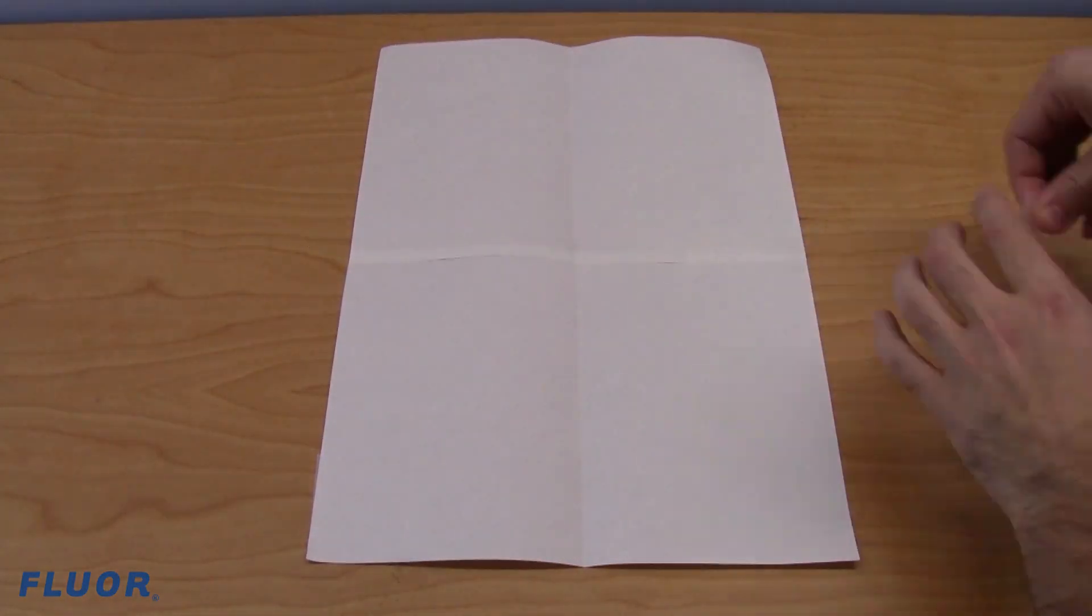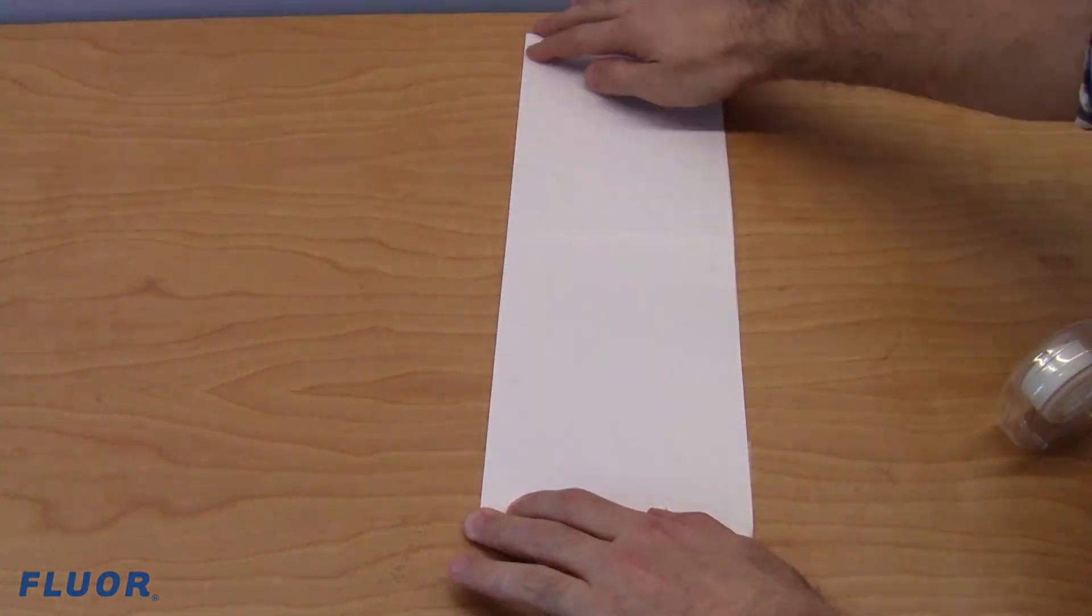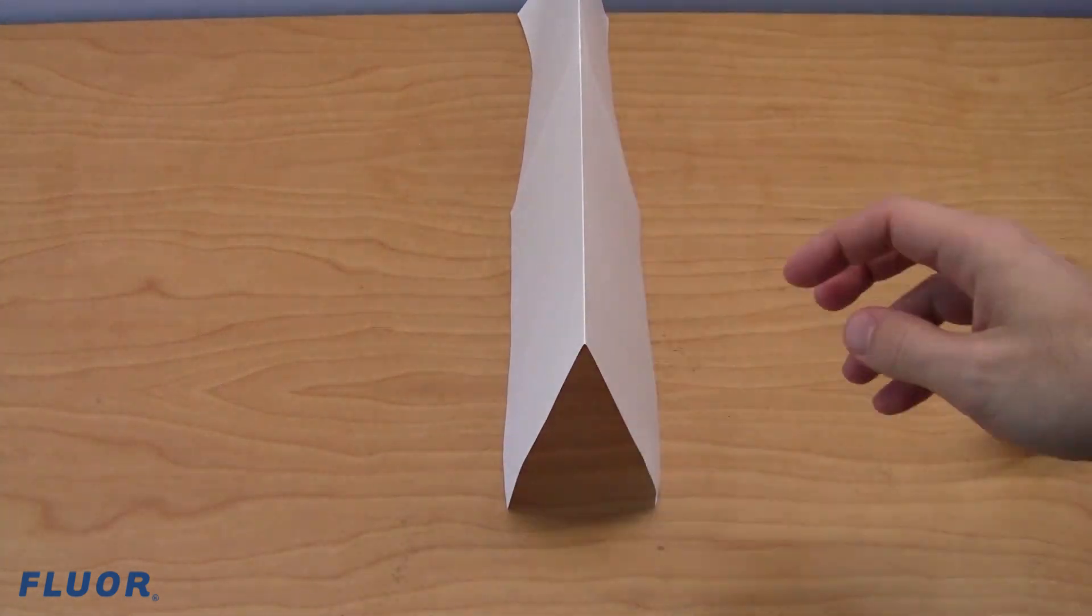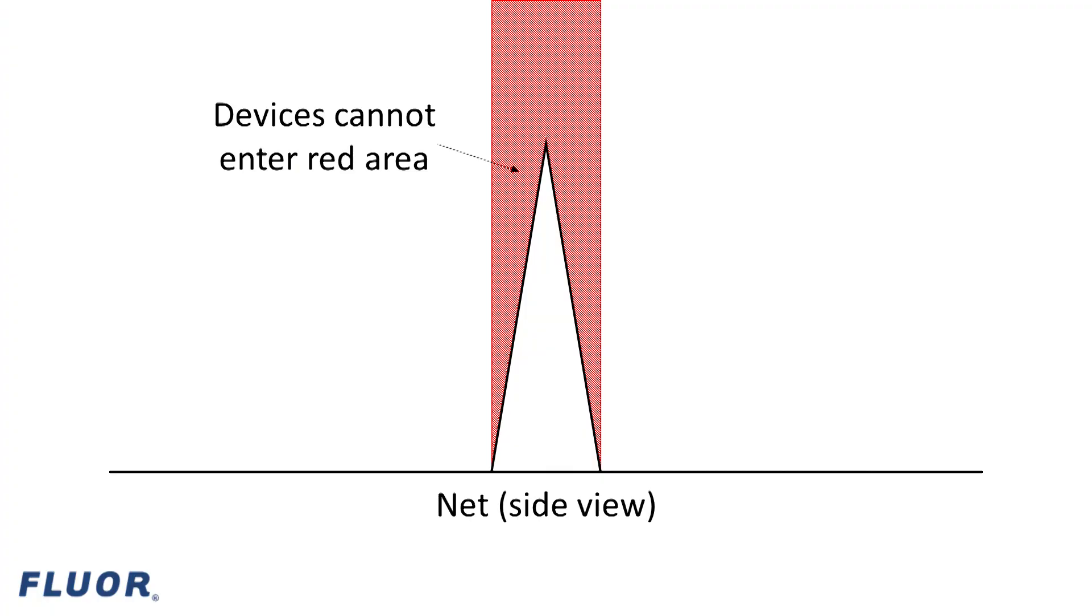The net is made from two pieces of paper taped together end to end and folded together to form an upside-down V-shape. There are no size restrictions on your devices, but they cannot touch the net or occupy the space above the net as shown in this diagram.